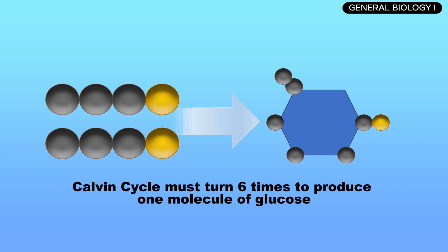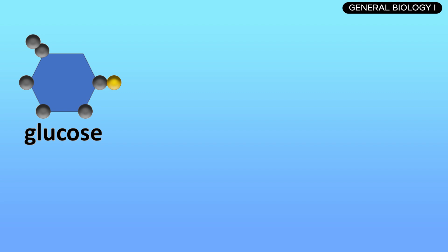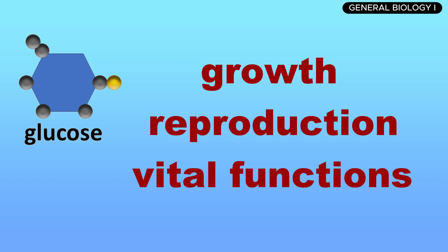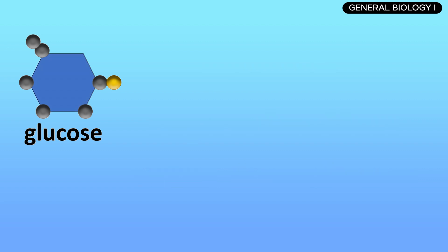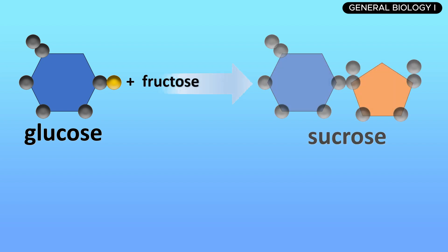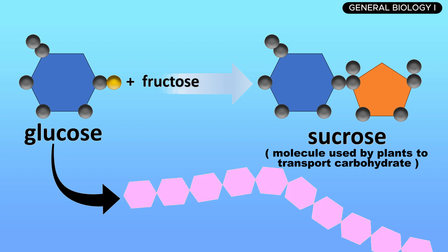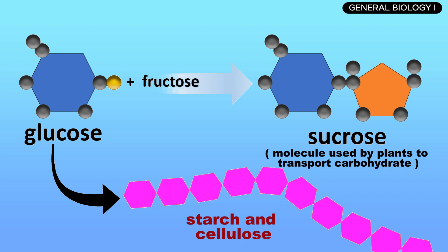The energy stored in this glucose will later be used by the plant for growth, reproduction, and other vital functions. Fructose is added by removing the phosphate in order to form sucrose, the molecule used by plants to transport carbohydrates. It's also the starting molecule for the synthesis of starch and cellulose.